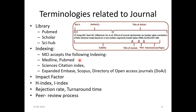The impact factor is the average number of citations which journal articles in a journal produce. It is given by the formula: the total number of citations in the journal divided by the total number of journal articles published. Similarly, while impact factor tells about the quality of the journal, the h-index and i-index tell about the quality of authors. You should also know about rejection rate and turnaround time — all these relate to journal quality.